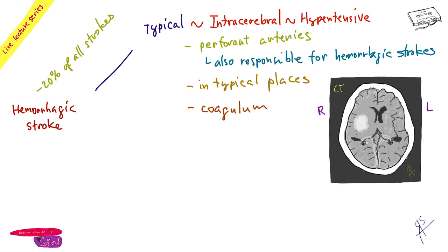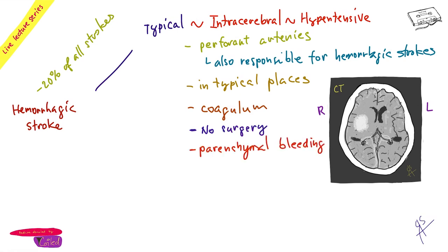So you have essentially a ping-pong ball of blood and destroyed tissue. These are typical bleedings, and importantly, you won't do anything surgically with this. In the past they used to remove the blood, but they found they made more mess than if they left it. A typical parenchymal bleed on CT — you leave it.